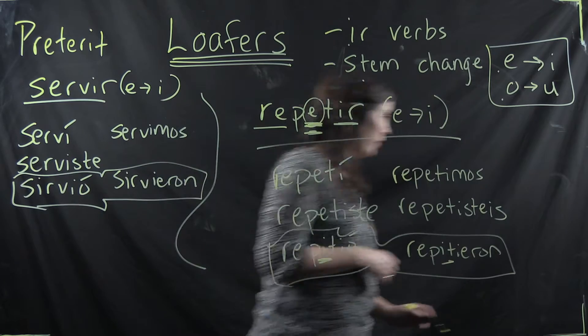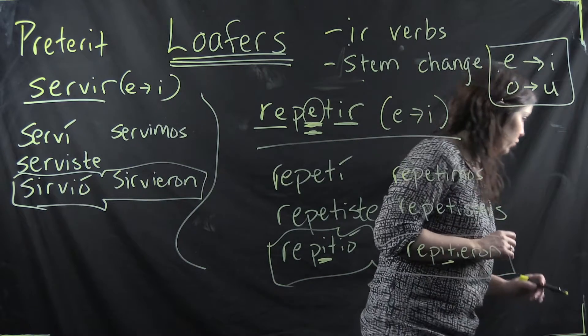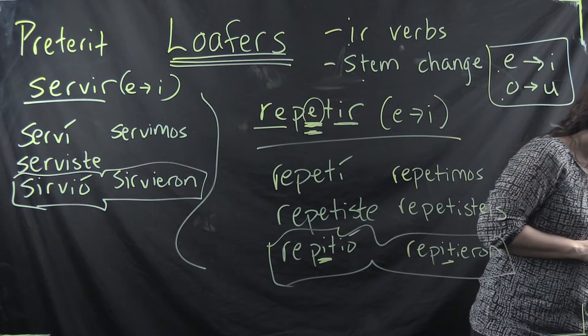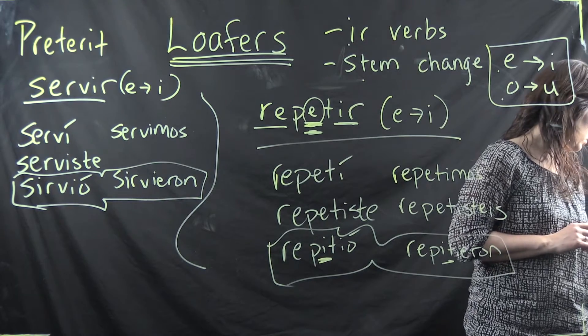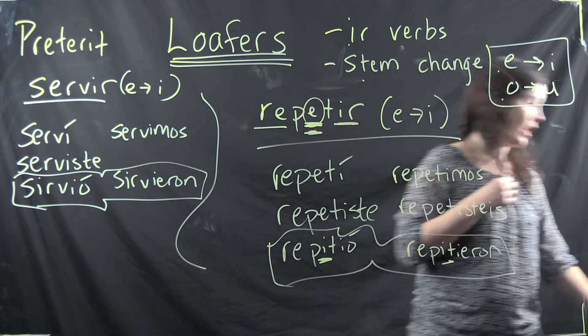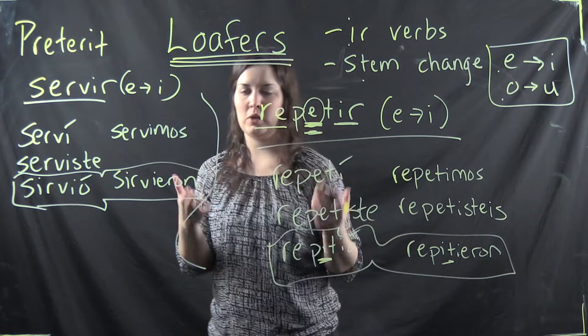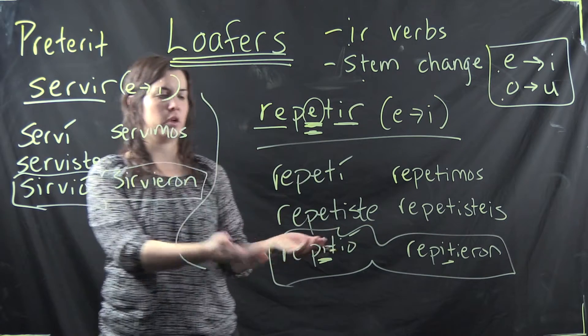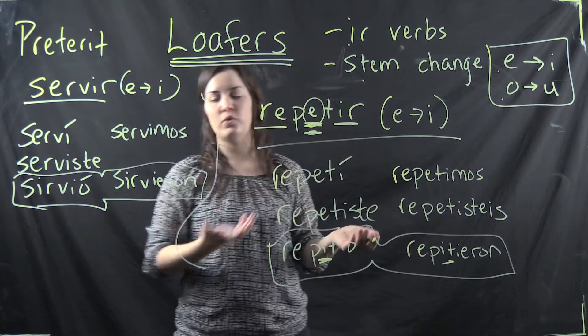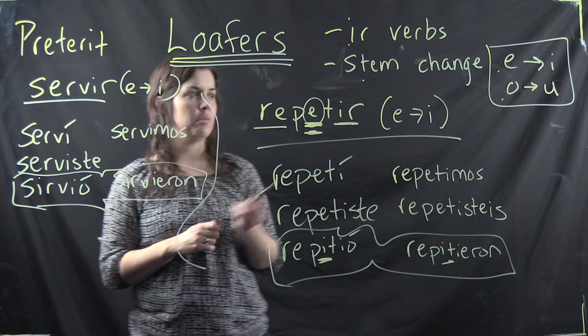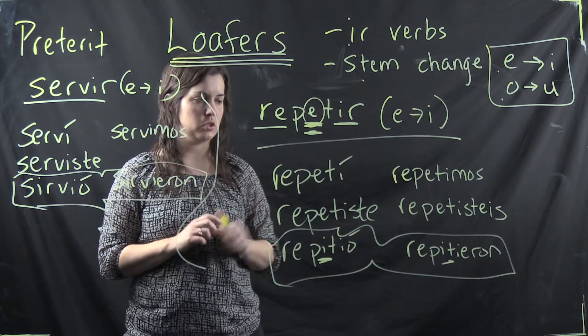So your book will call them verbs with irregular forms and the preterite with the cambio radical which is the stem change E to I or O to U. I call them the loafer because of this particular stem change. I don't want you to think the stem change happens in all the forms because that would be incorrect. Okay I'm going to pause for a second to erase the board and then I'm going to show you one more thing.